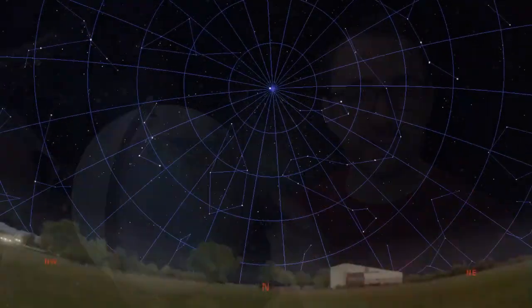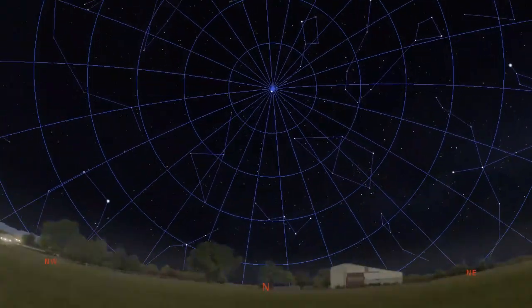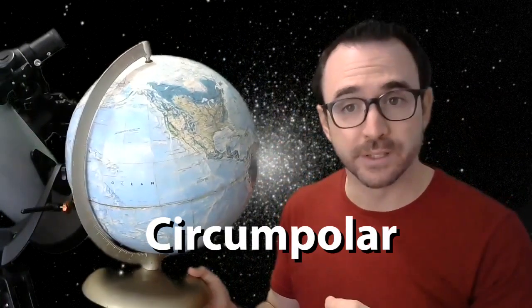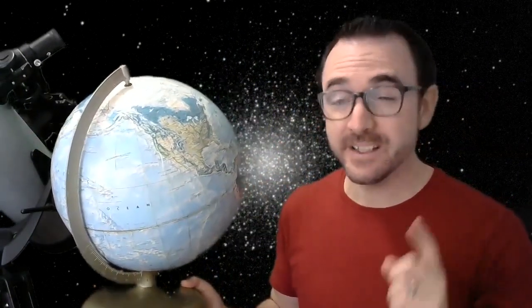And if you recall from one of our previous videos, if you live in the northern hemisphere, there are stars to the north that never dip below your horizon. We say that these stars are circumpolar and the amount of sky that is circumpolar depends on your latitude, your distance from the equator.